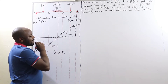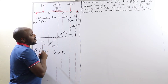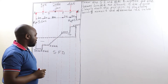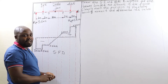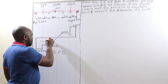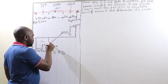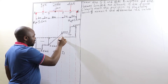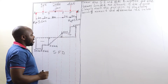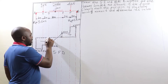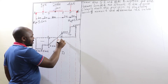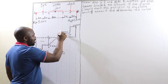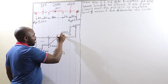For us to get the position of the maximum bending moment, we are going to use what we call the similarity method. In this case, we have two right-angle triangles here. We can call this point A, that point B, this is going to be point C, that is going to be point D, and this point here is going to be point E.